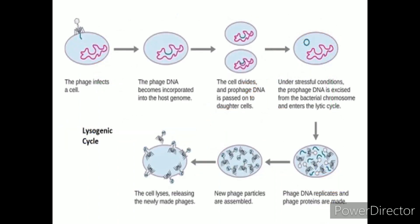During the lysogenic life cycle, the host bacteria continues to live and reproduce normally after the replication of bacteriophages. The genetic material of the bacteriophage incorporated into the bacterial DNA during the lysogenic life cycle is called the prophage, which can be transmitted to daughter cells during bacterial cell division. The lysogenic cycle is a temperate and non-virulent infection as the bacteriophage doesn't kill the host cell. The bacteriophage ligands attach to the receptors on the surface of the bacterial cell wall, and the attachment is highly specific.